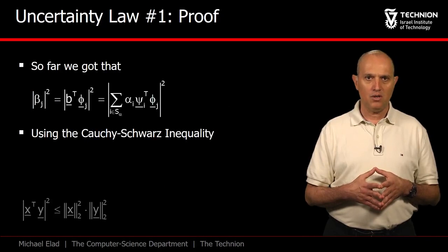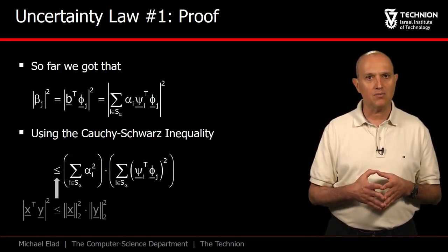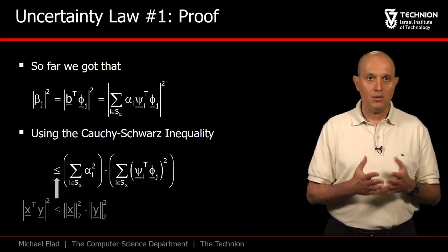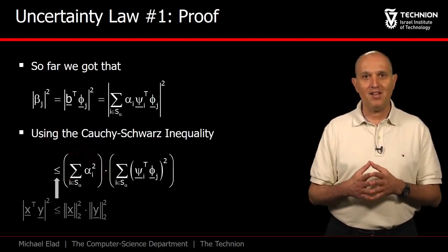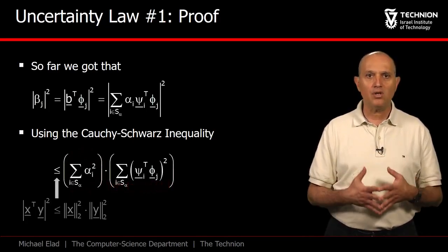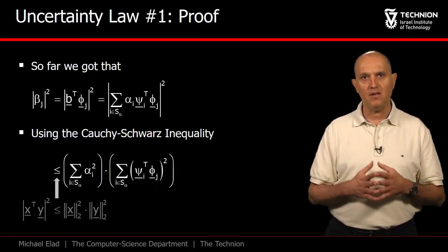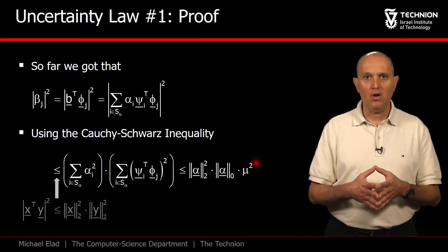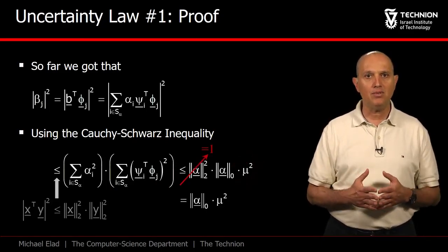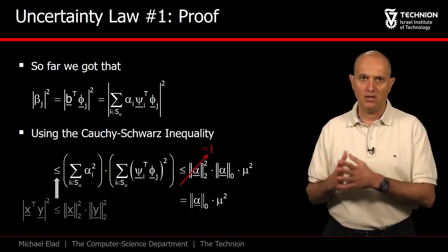Using the Cauchy-Schwarz inequality, we can upper bound the above term by the multiplication of two parts. The first being the sum of squares of the entries in α, which is simply one. The other part is a sum of Sα elements, each being a square cross inner product of columns taken from Ψ and Φ, and as such known to be smaller than μ². Thus, all this expression can be upper bounded by the number of non-zeros in α times μ².